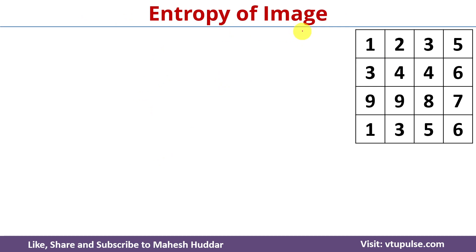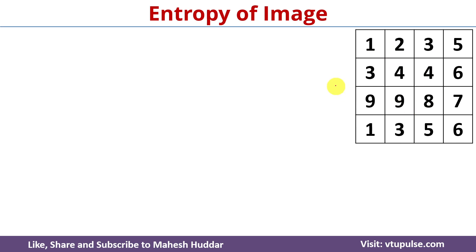In this example, the image contains 16 pixels — there are 4 rows and 4 columns. Each of these pixels can have a value in the range of 1 to 9, so some pixels have the value 1 and some pixels have a value up to 9.